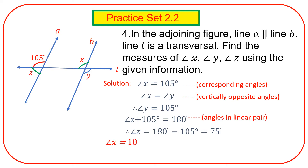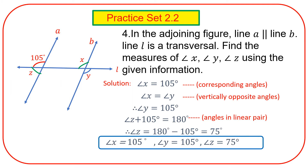Angle X is equal to one hundred and five degrees. Angle Y is equal to one hundred and five degrees. Angle Z is equal to seventy-five degrees. Highlight the answer.